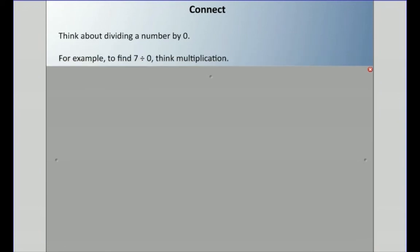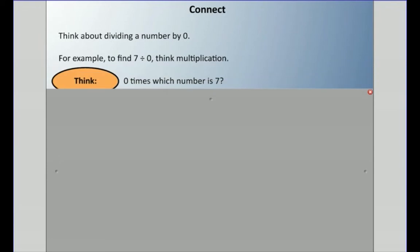Now, what about dividing by zero? If you needed to find seven divided by zero, think in terms of multiplication: zero times which number is seven? Think about that — zero times what equals seven?